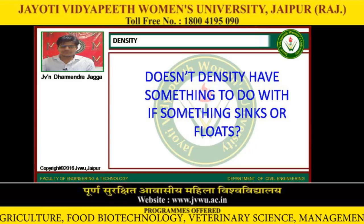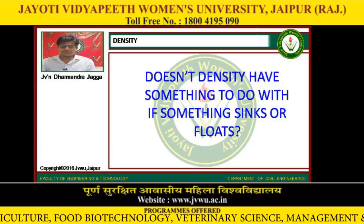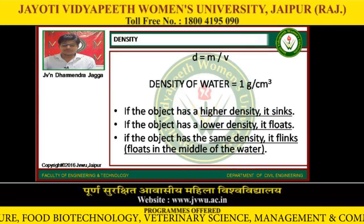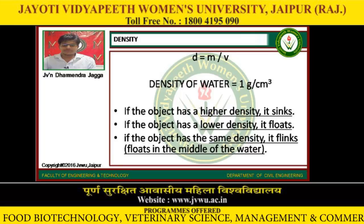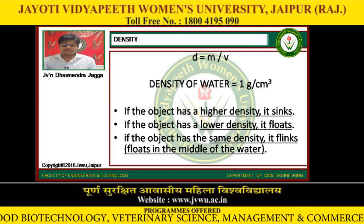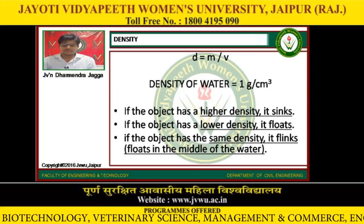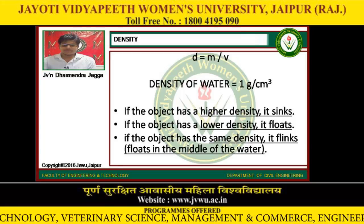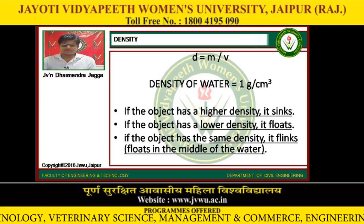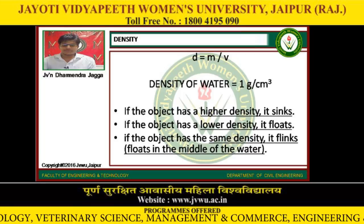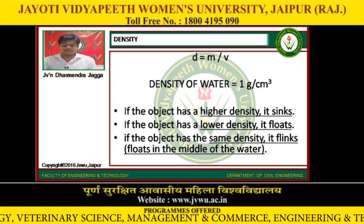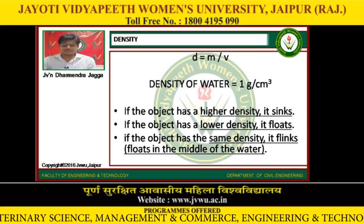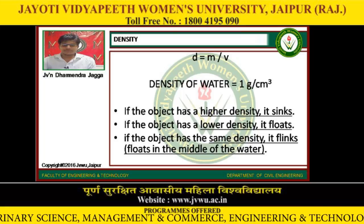Doesn't density have something to do with whether something sinks or floats? Density is mass per unit volume. The density of water is 1 gram per centimeter cubed. If an object has a higher density it sinks; if it has a lower density it floats; if it has the same density it suspends and floats in the middle of the water.